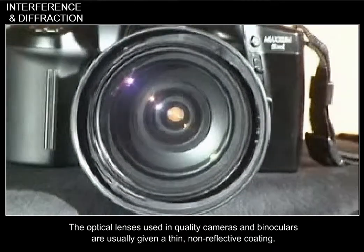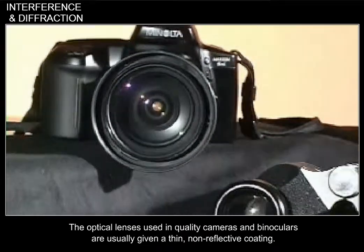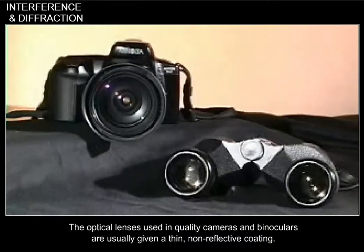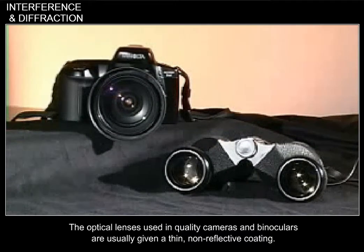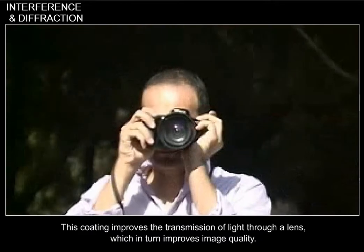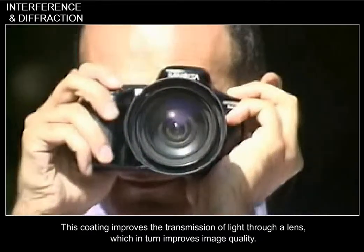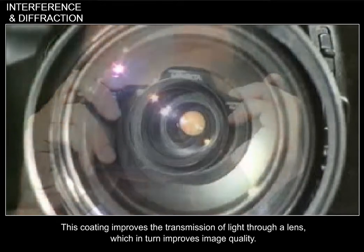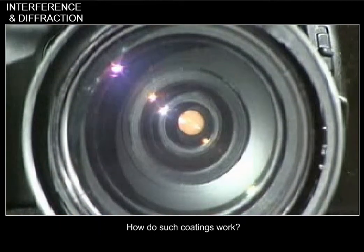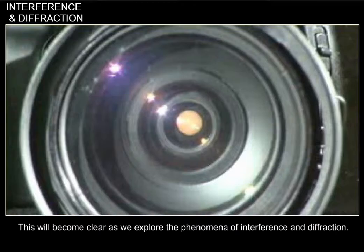The optical lenses used in quality cameras and binoculars are usually given a thin, non-reflective coating. This coating improves the transmission of light through a lens, which in turn improves image quality. How do such coatings work? This will become clear as we explore the phenomena of interference and diffraction.